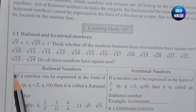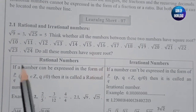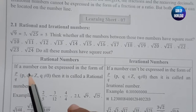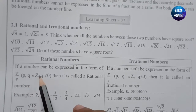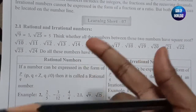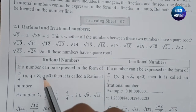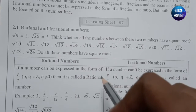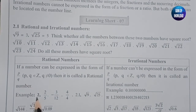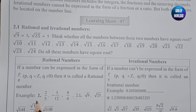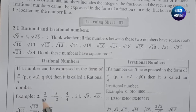So what is a rational number and what is an irrational number? If a number can be expressed in the form of p by q — that is, in the fractional form — where p and q belong to integers (either positive or negative), and the condition is q must not be equal to 0, then that number is called a rational number. For example, 2 can be written as 2 divided by 1, so it is a rational number.